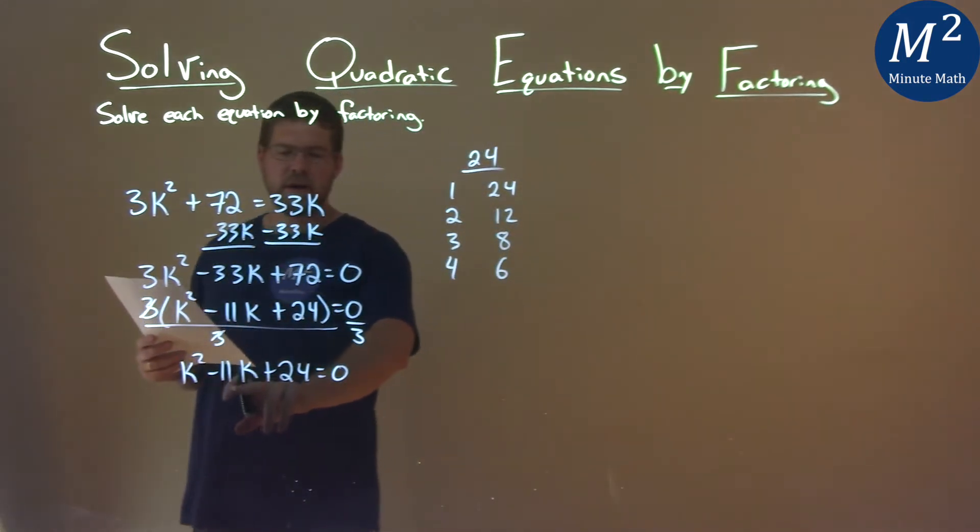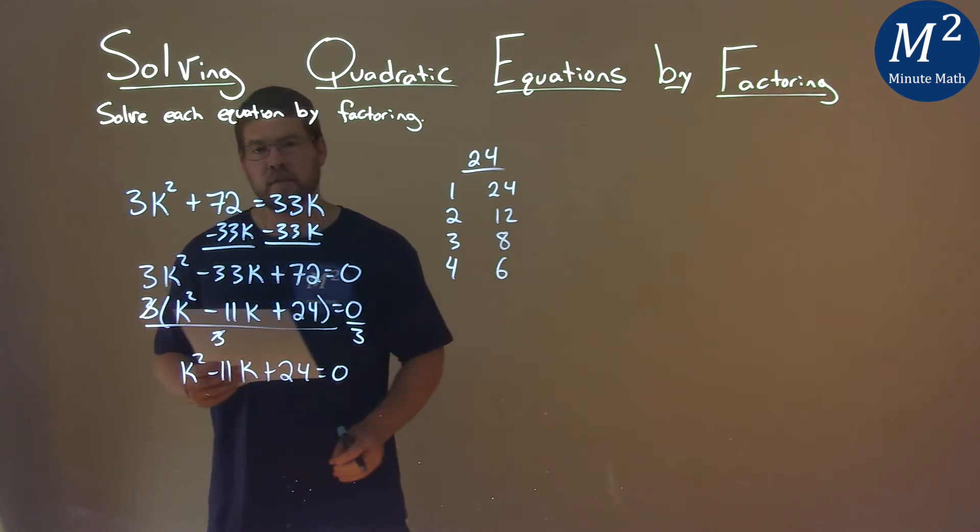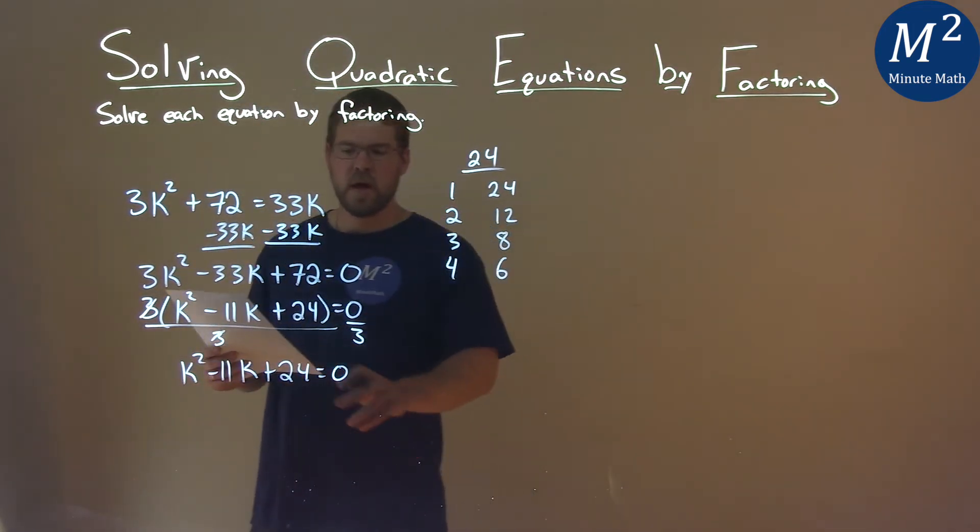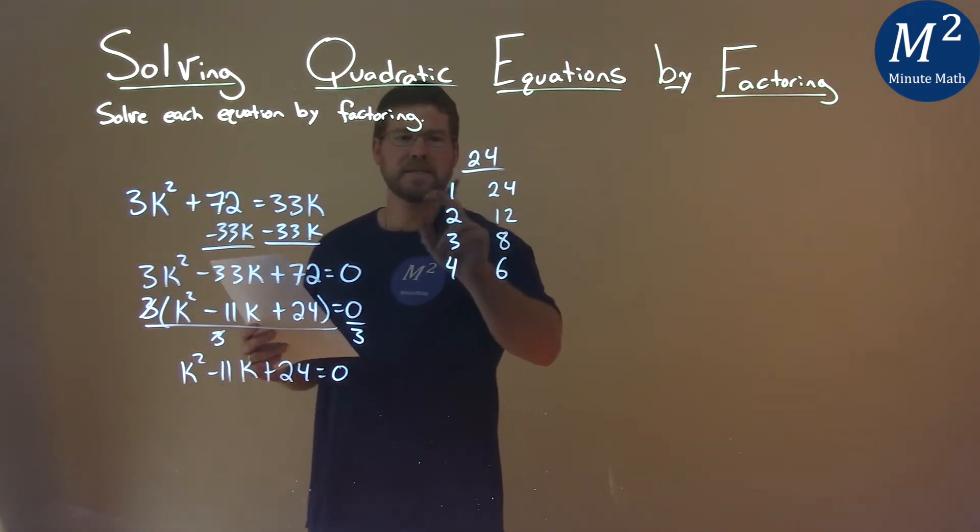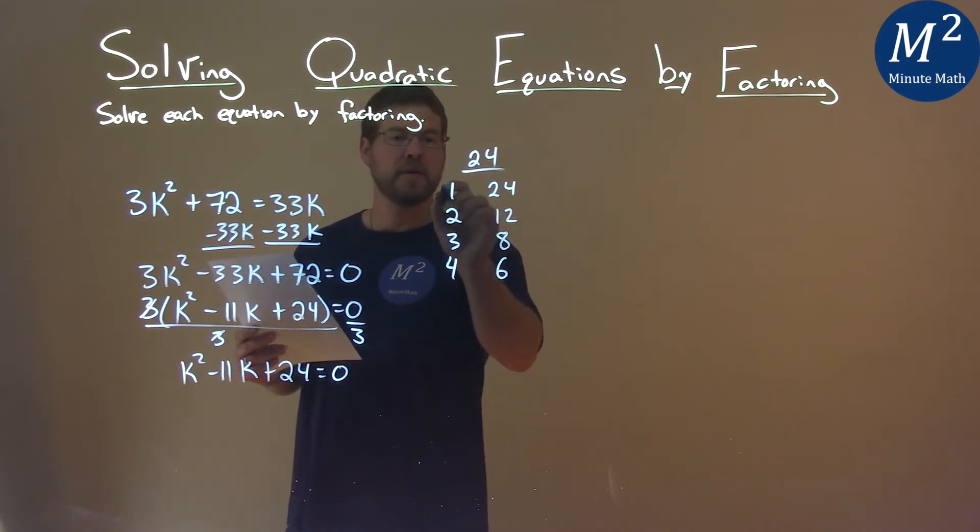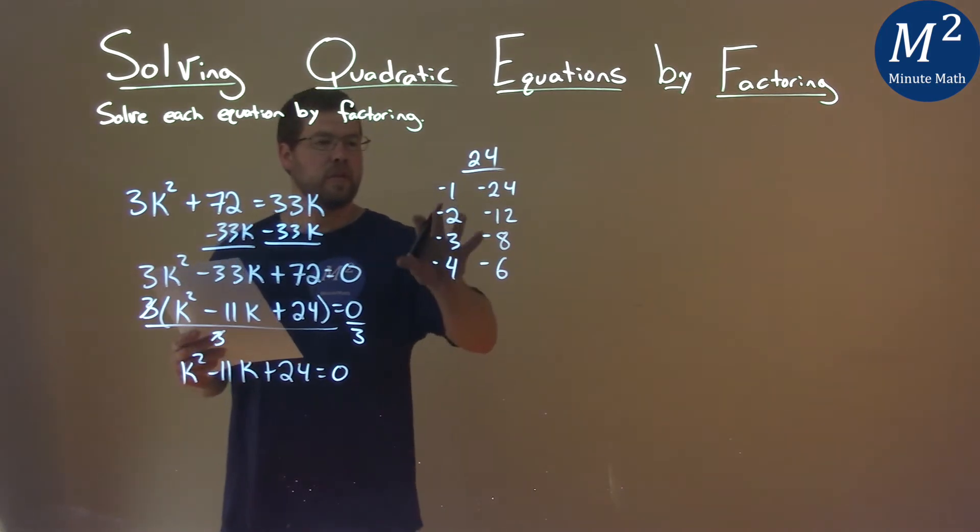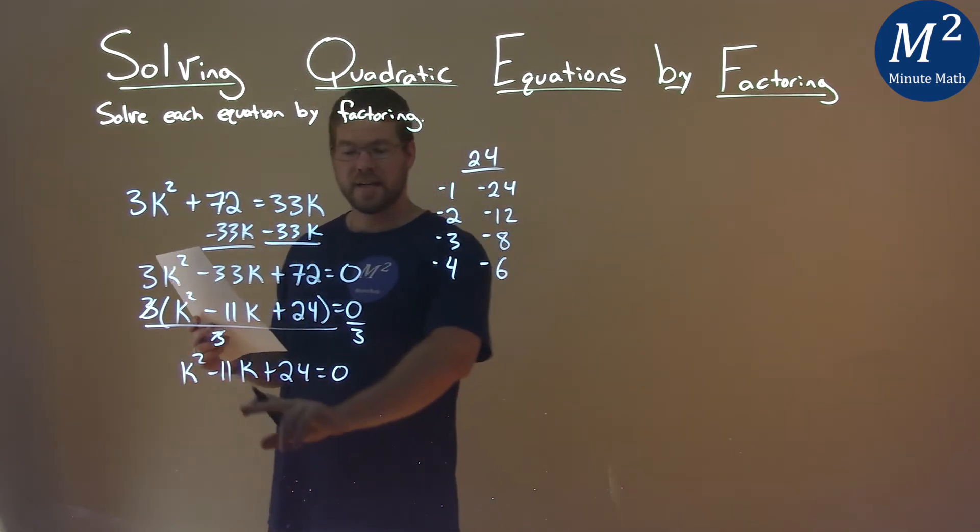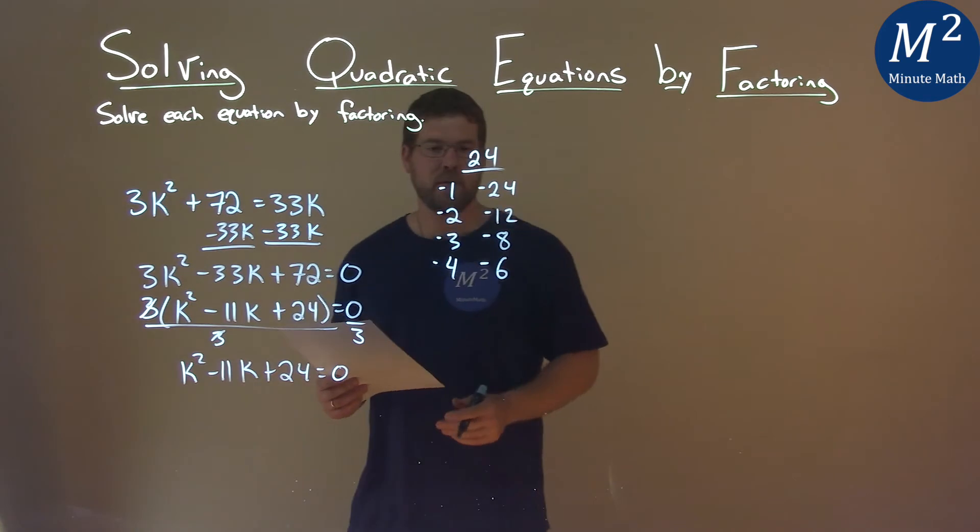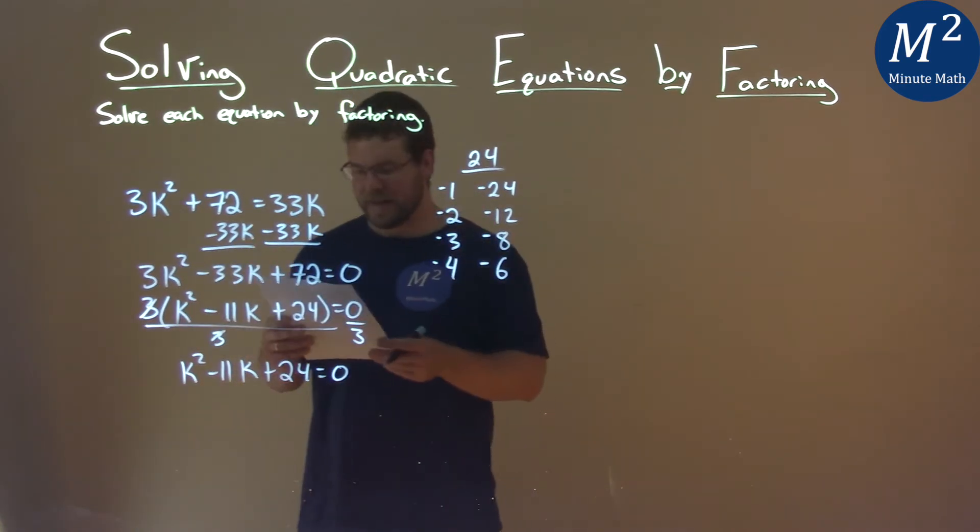Now since my b value is negative 11 and my c value is positive 24, I know both of these numbers must be negative, because two numbers that are negative multiply to 24 but add to be negative 11. They both will have to be negative.